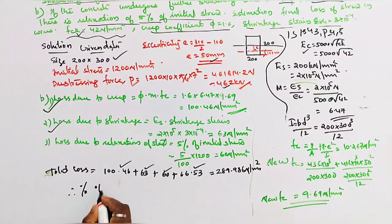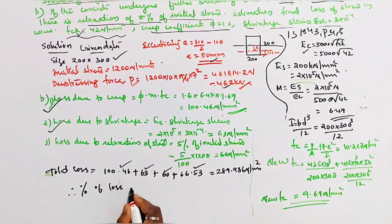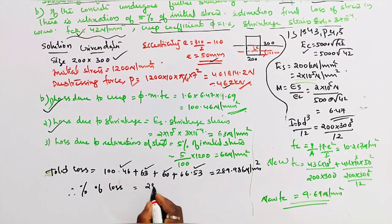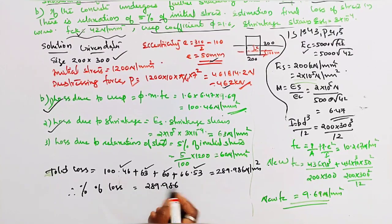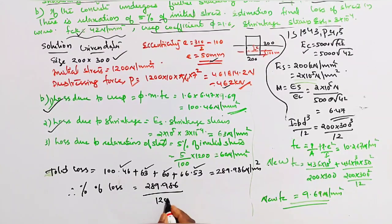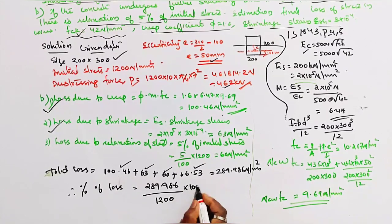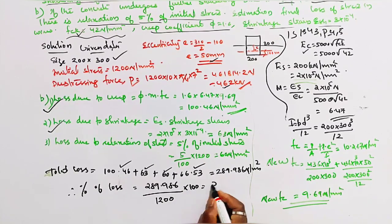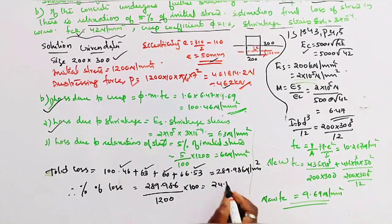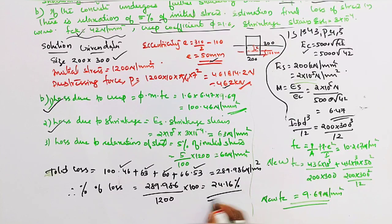Percentage of loss of pre-stress = (total loss / initial stress) × 100 = (289.99 / 1200) × 100 = 24.16%.